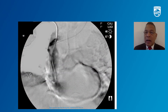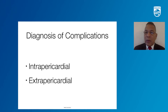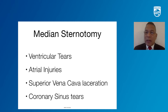Here you can see a perforation in the superior vena cava and contrast in the pericardial space. We divide complications into intrapericardial — which manifests with pericardial tamponade — and extrapericardial — which manifests with right or left pleural effusion. If the patient is hemodynamically unstable, we do median sternotomy. We discourage the use of pericardial synthesis, and we prefer median sternotomy to repair ventricular tears, atrial injuries, superior vena cava lacerations, or coronary sinus tears.